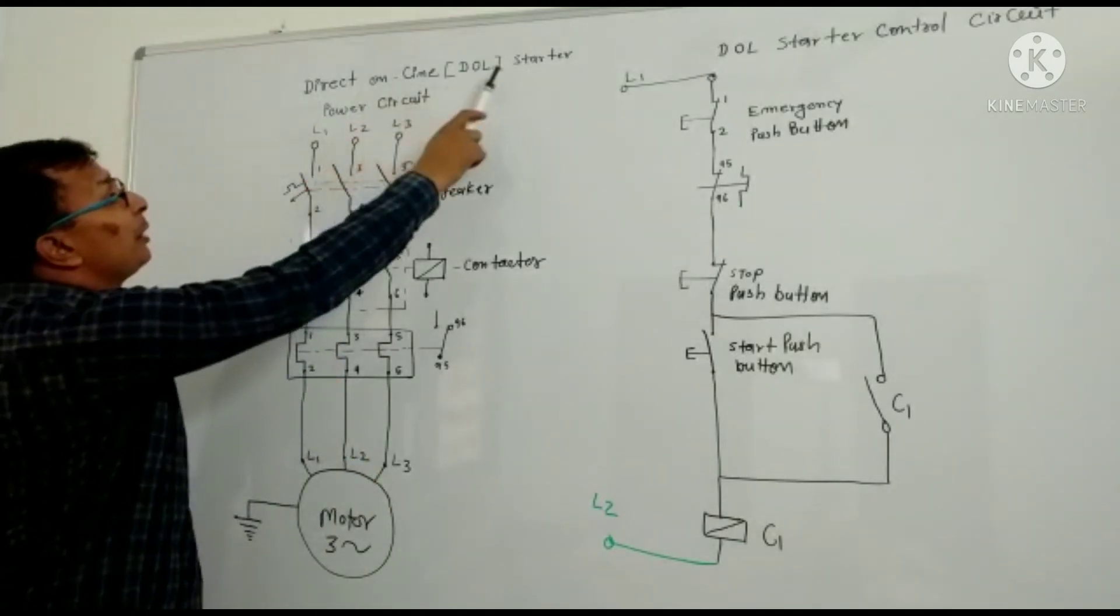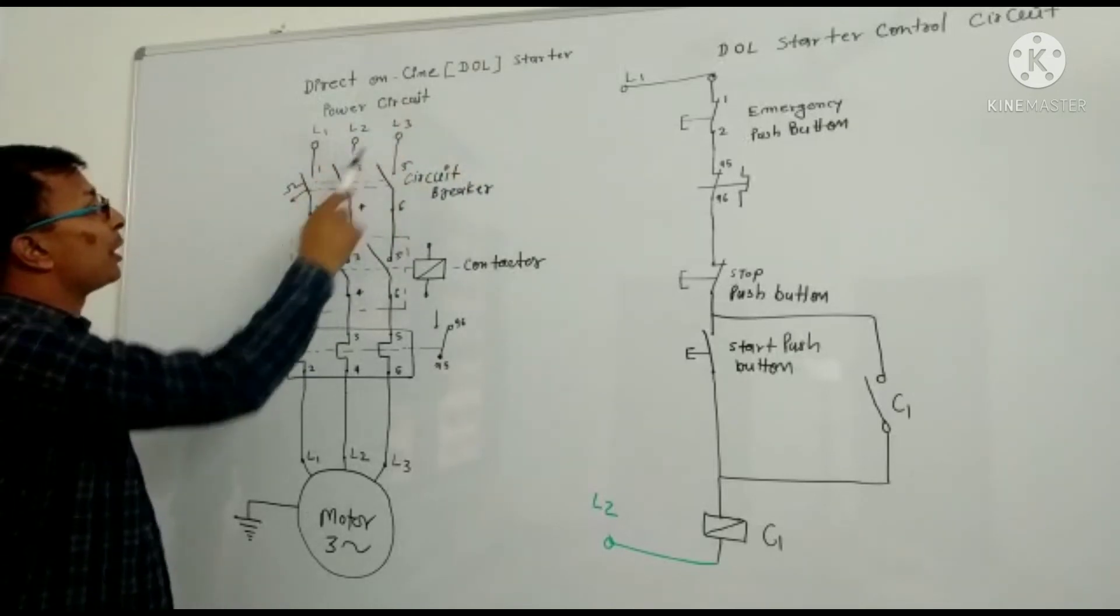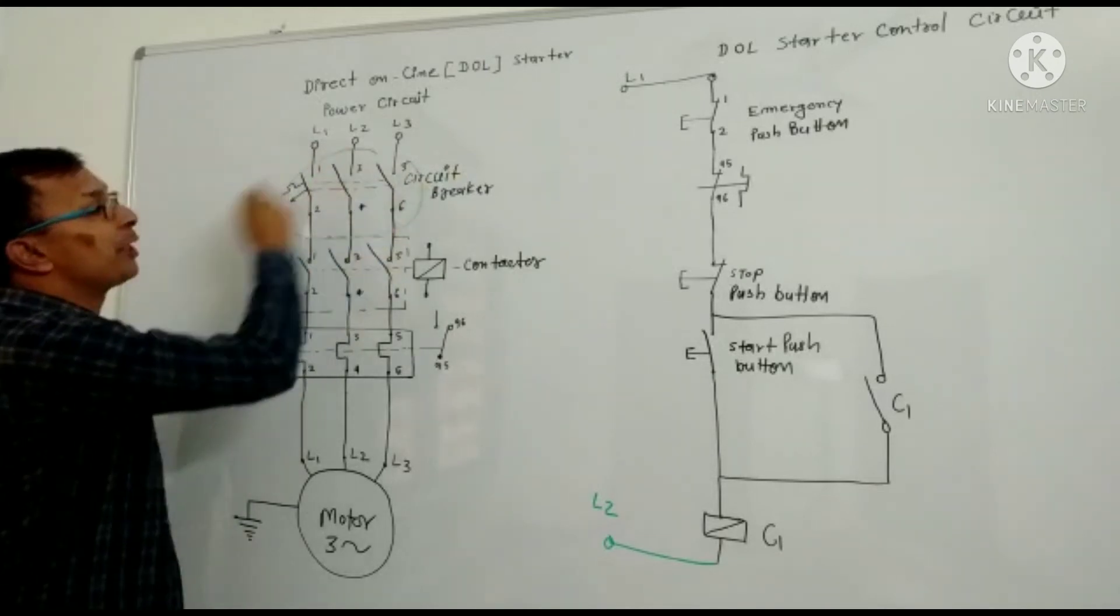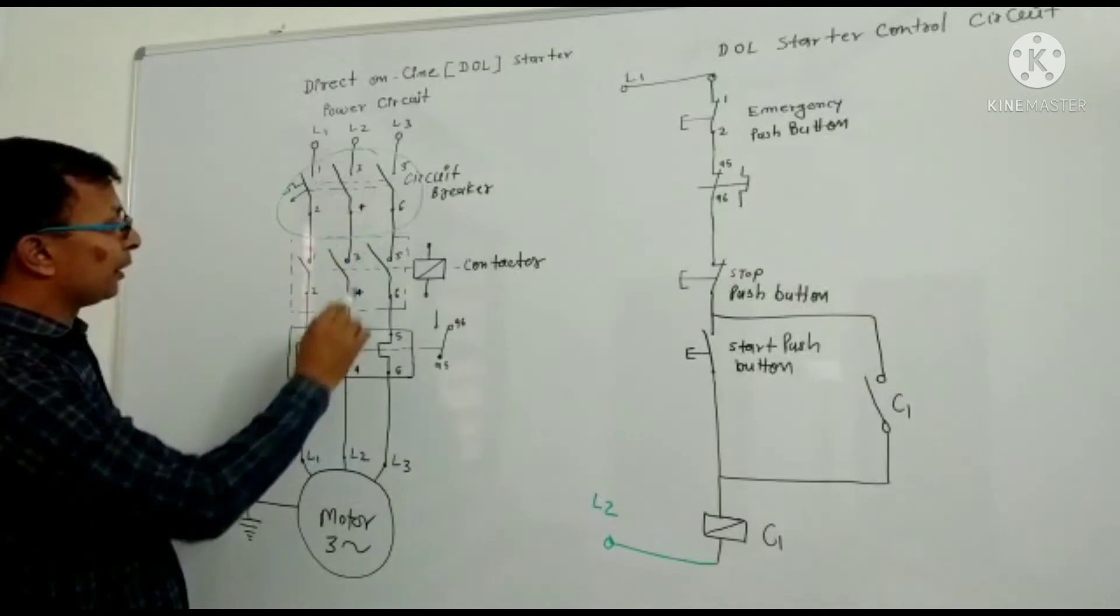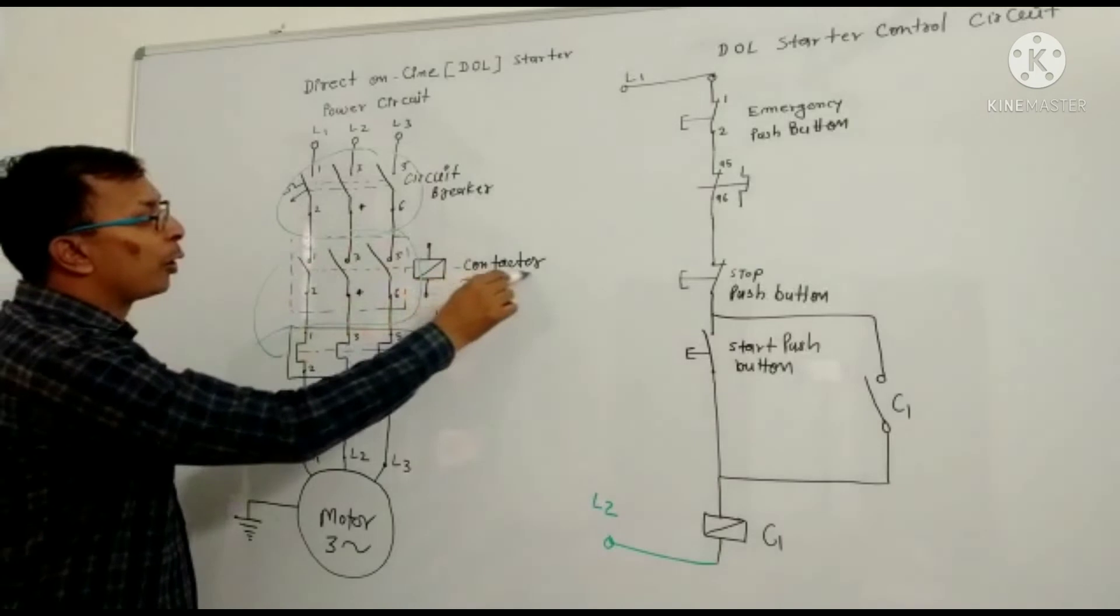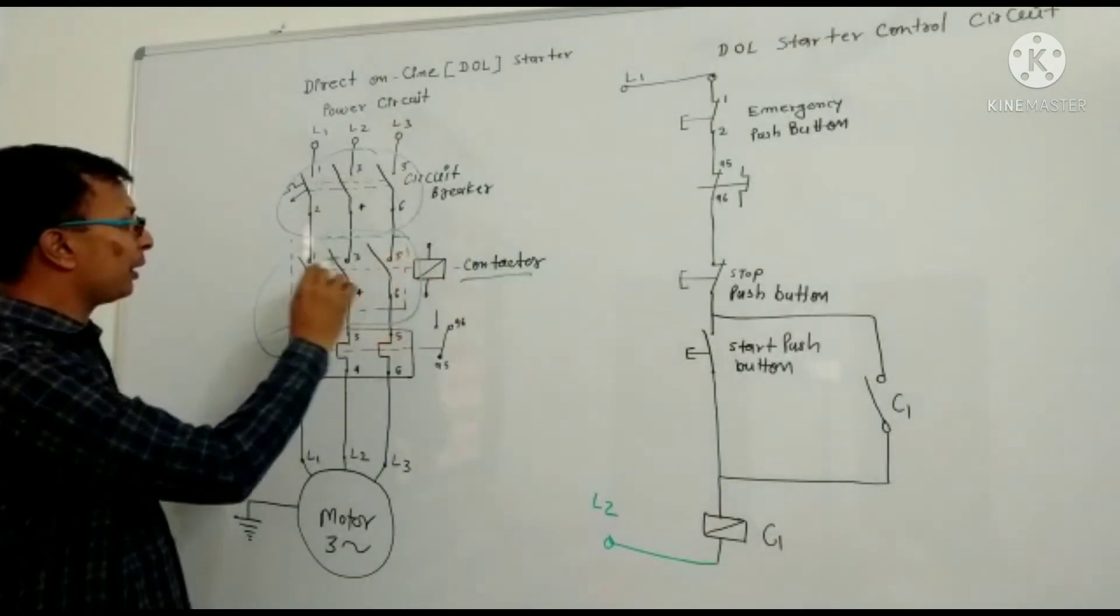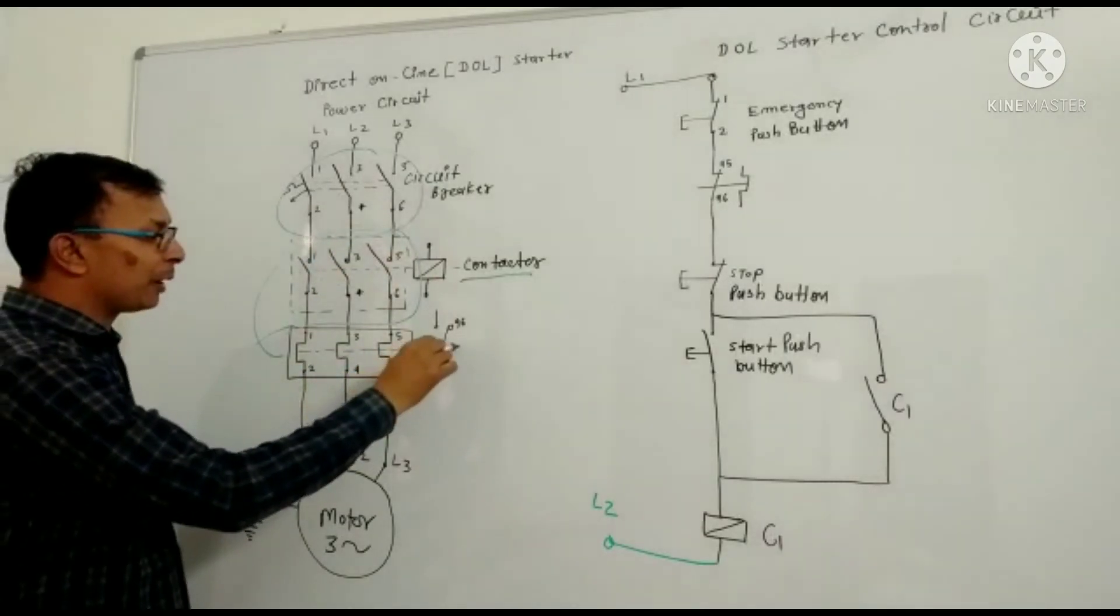Direct Online DOL Starter Power Circuit: L1, L2, L3. This is the MCCB or Circuit Breaker. This is the Contactor, Magnetic Contactor. This is the Coil and this is the Contacts. This is the Thermal Relay.